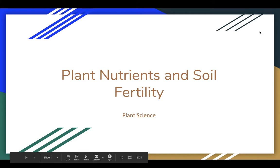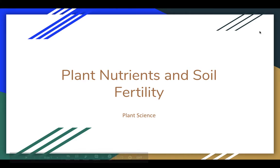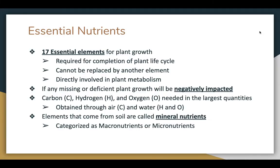We're going to talk about plant nutrients and soil fertility. We'll start with the 17 essential elements that are required for plant growth. These 17 elements are considered essential because they are required for the completion of the plant's life cycle. They cannot be replaced by other elements, and they are all directly involved in plant metabolism.